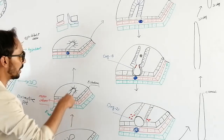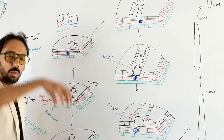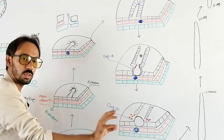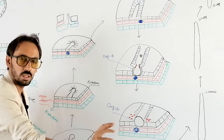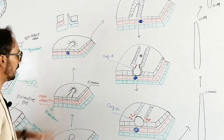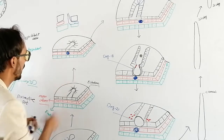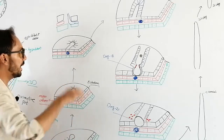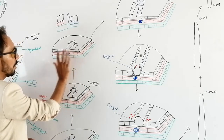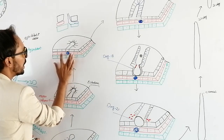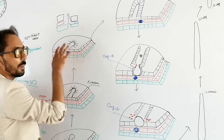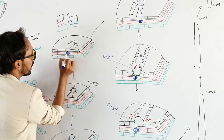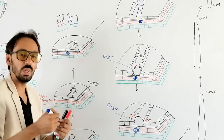When the ectodermal cells go deeper inside through the primitive pit, they will then move caudally or cephalically. As you can see in this three-dimensional image, the endoderm is shown in grey, the mesoderm in red, and between the mesoderm layers there is a structure called the notochord.